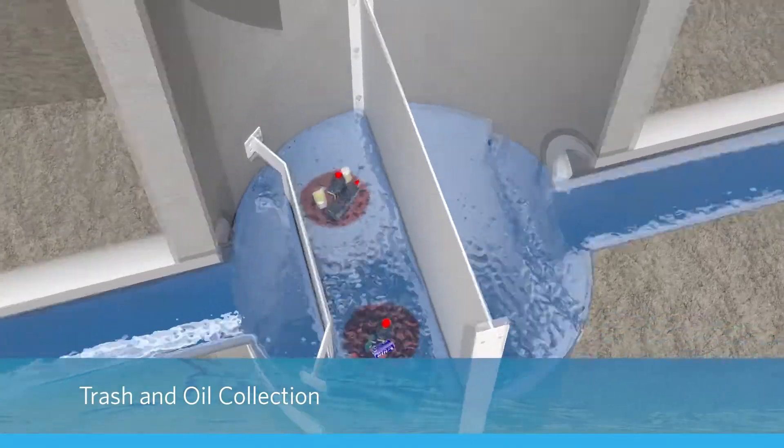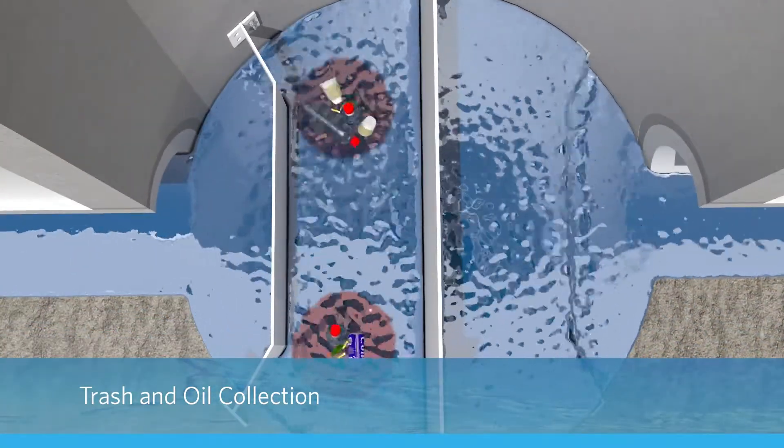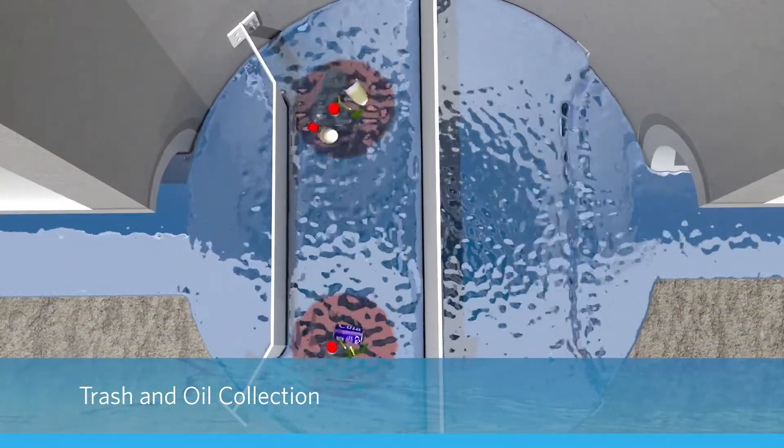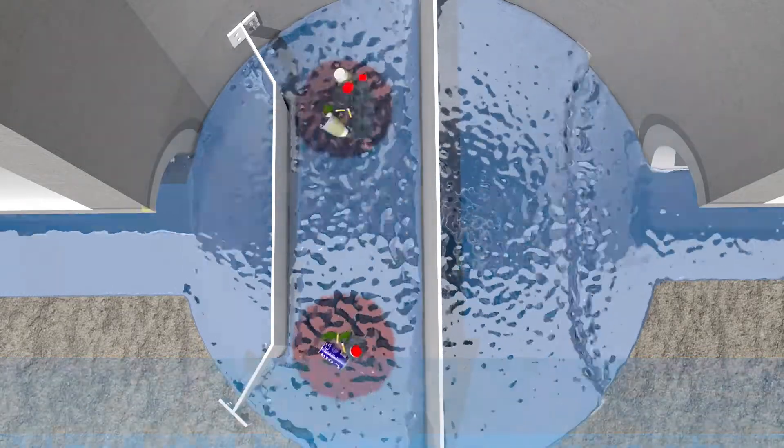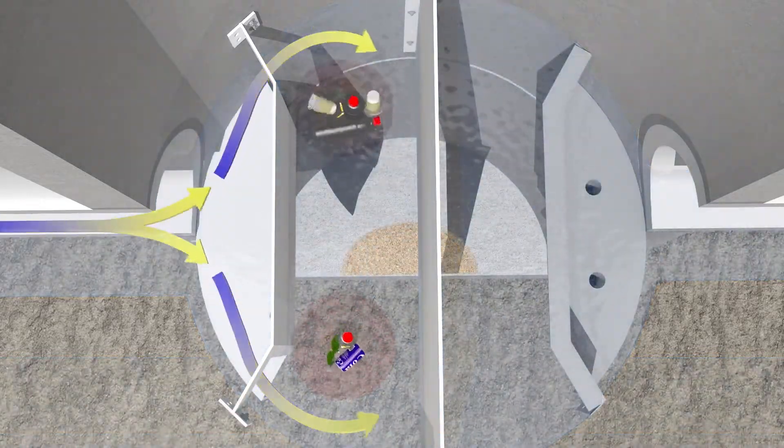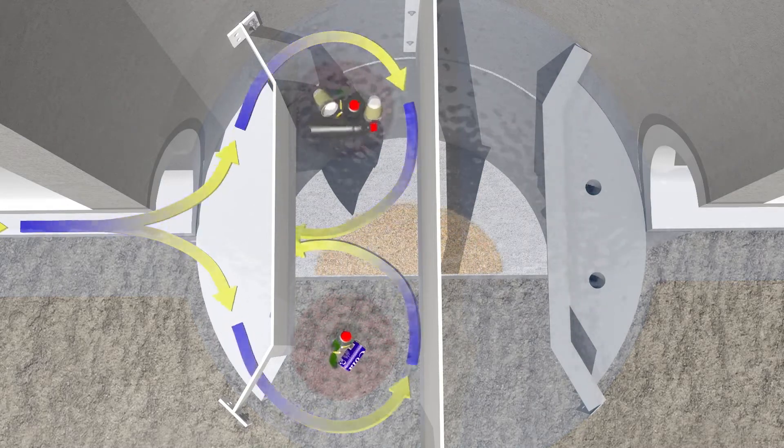With its unique inlet flow splitter, stormwater is separated along the perimeter of the chamber and the oil skimmer wall, and back toward the inlet flow splitter creating two swirling vortexes for efficient trash and oil collection.